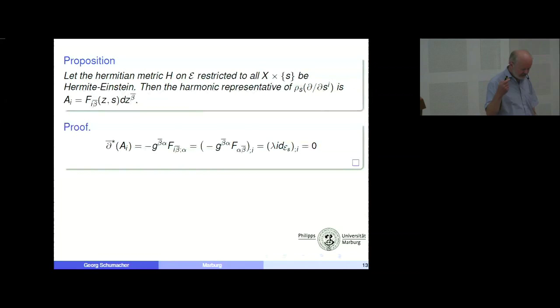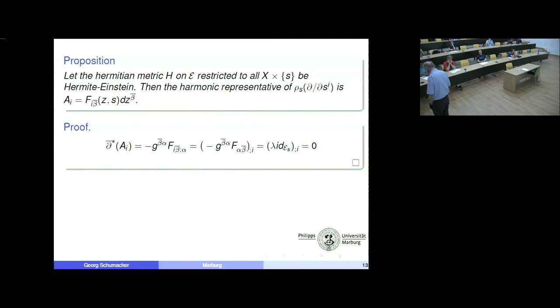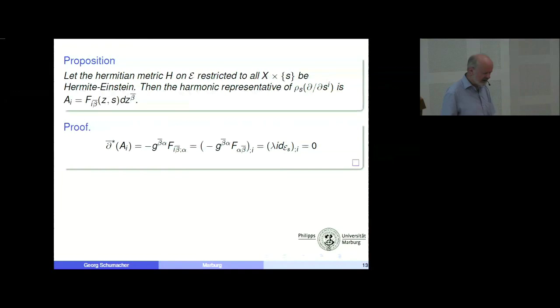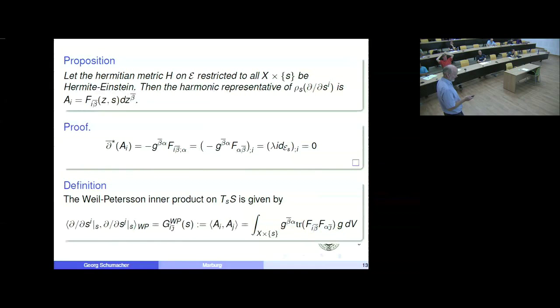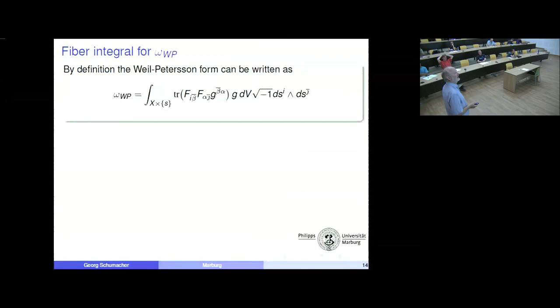We are now in the position that we have natural representatives of the Kodaira-Spencer classes. The construction is functorial — meaning compatible with base change — and in particular, no matter which families we start from, everything descends to the moduli space, giving intrinsic definitions. Here is the inner product: trace of F_{iβ̄} · F_{ᾱj}, contracted with the Kähler form, then integrated against the Kähler volume form. The corresponding (1,1)-form is what we find here.